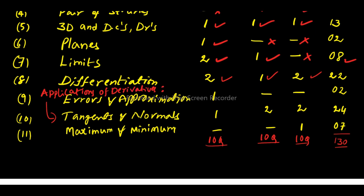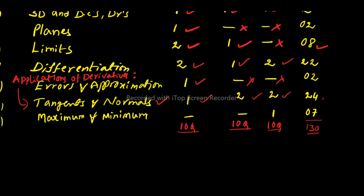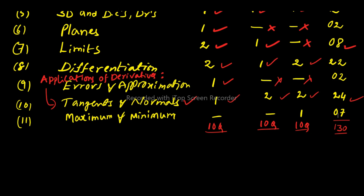Under Applications of Derivatives there are 3 topics. First, Errors and Approximations — only 1 two-mark question, simply 2 marks weightage. The next major topic is Tangents and Normals: 1 two-mark, 2 four-mark, and 2 seven-mark questions, totalling 24 marks weightage. The last topic is Maximum and Minimum: no 2 marks, no 4 marks, only 1 seven-mark question — 7 marks weightage. Each section has 10 questions; Section 1 has no choice, and Sections 2 and 3 have 50% choice — out of 10, write any 5. Total is 130 marks.